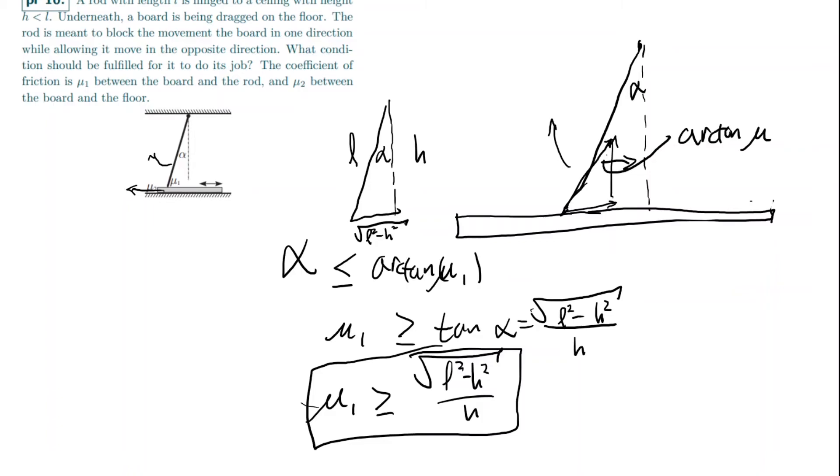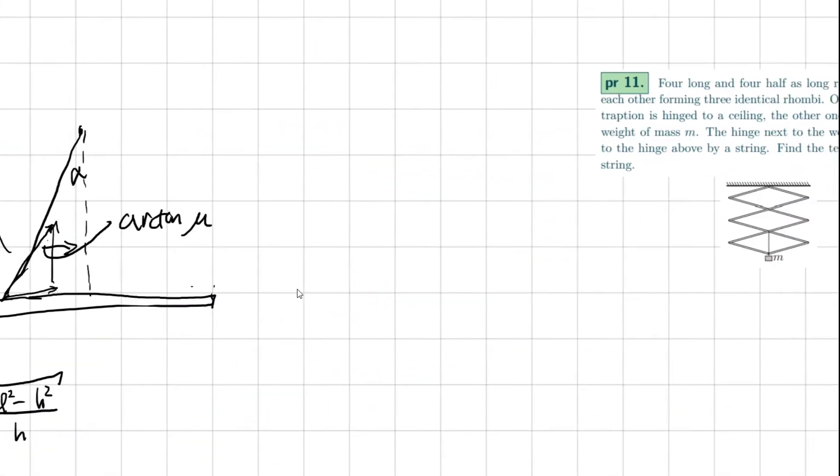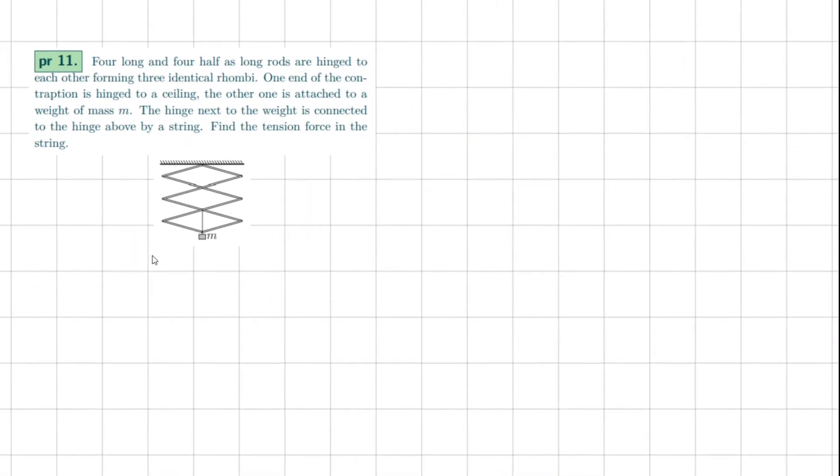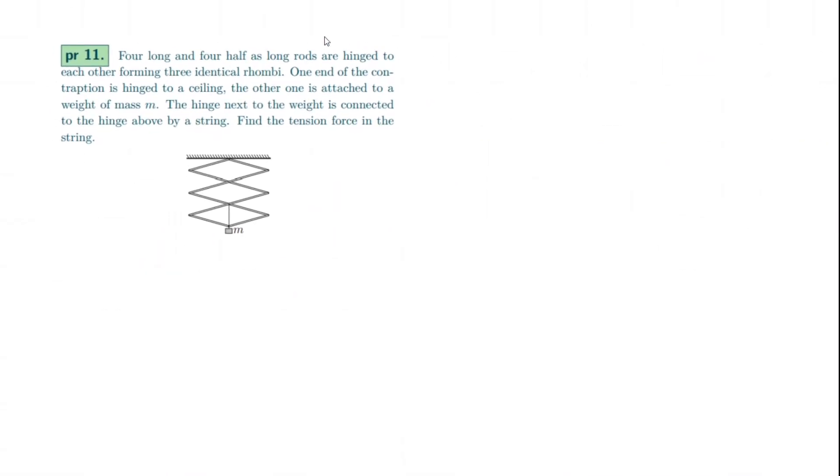Okay, let's move on to problem number 11, our last one for today. This one is actually pretty easy if you know the techniques behind it. Problem 11. Four long and four half as long rods are hinged to each other, forming three identical rhombi. One end of the contraption is hinged to a ceiling, and the other end is attached to a weight of mass m. The hinge next to the weight is connected to the hinge above by a string. Find the tension in the string.